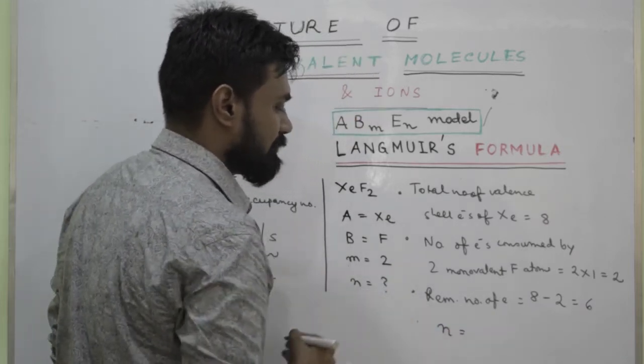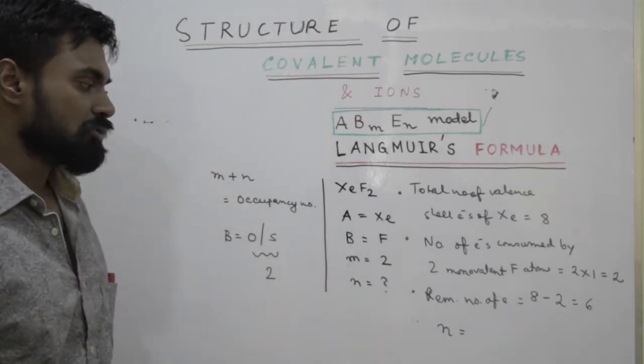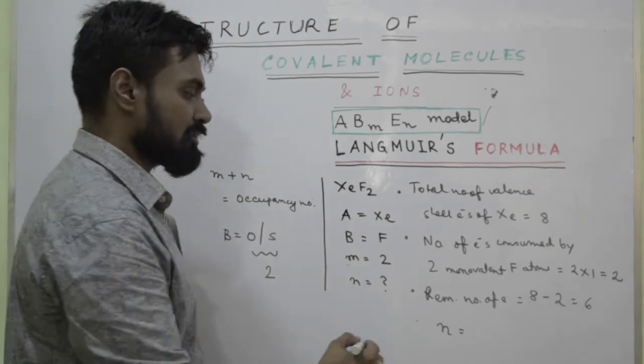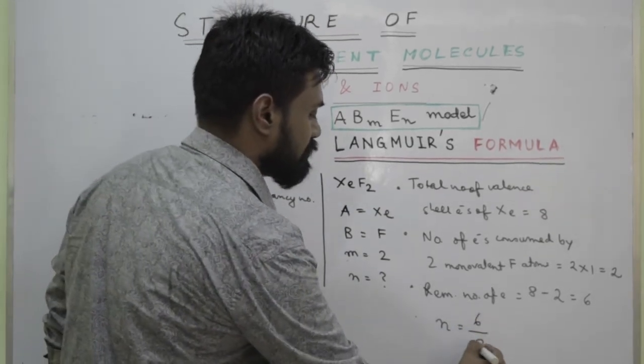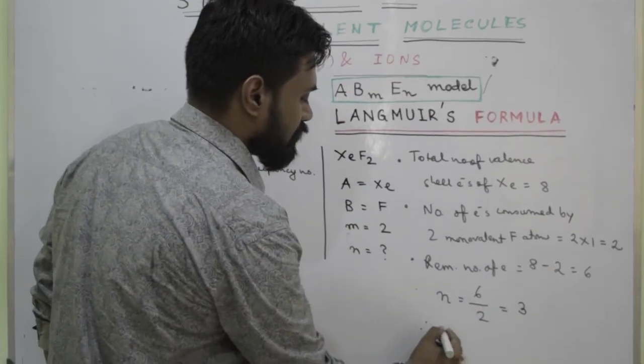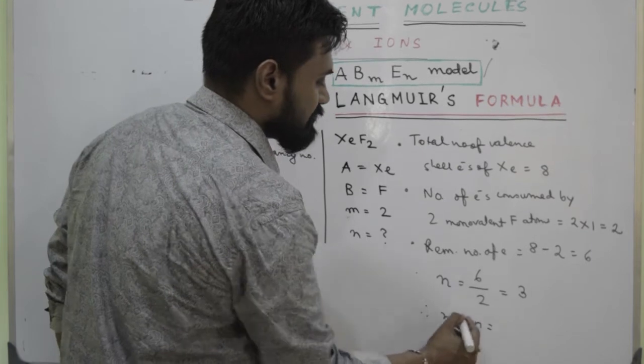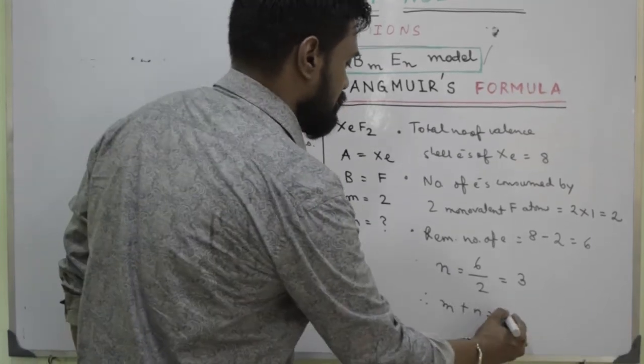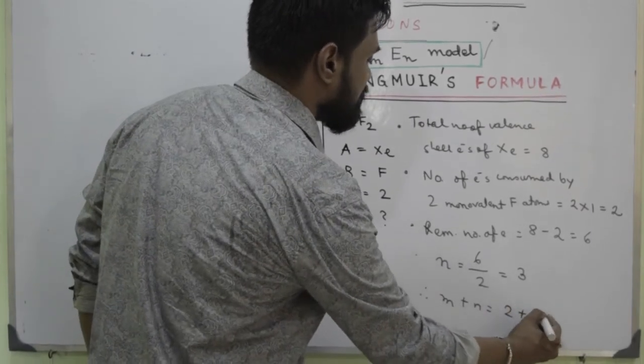Now how to find the number of lone pairs? You know that each lone pair contains two electrons. So if we find the number of lone pairs, that is we have to divide by 2, so we get 3. So therefore m plus n gives you how much? 2 plus 3, that is 5.